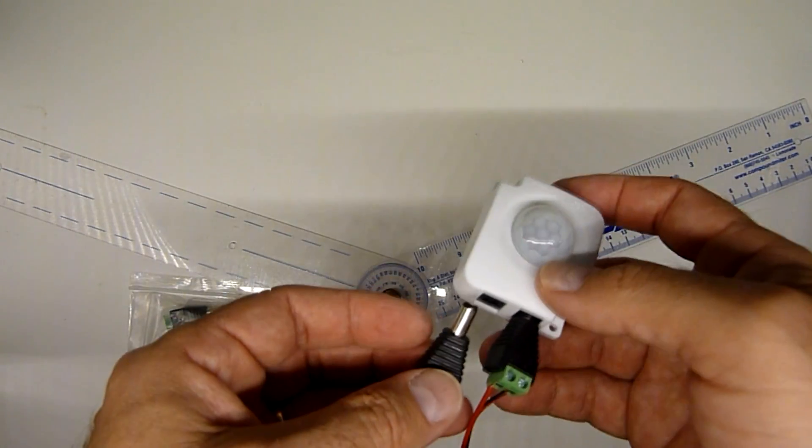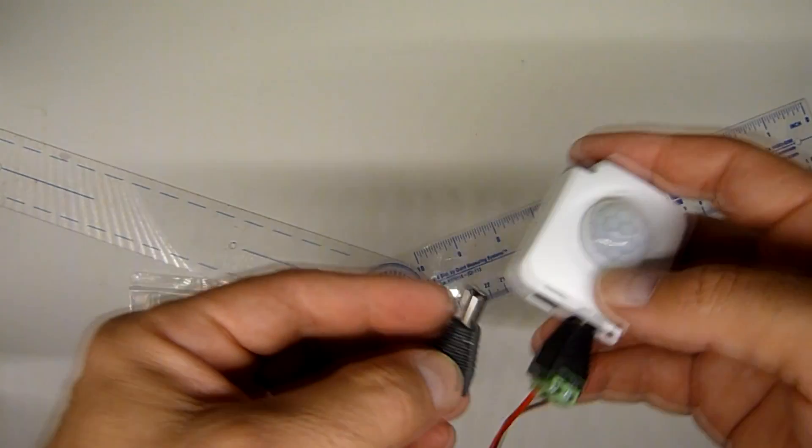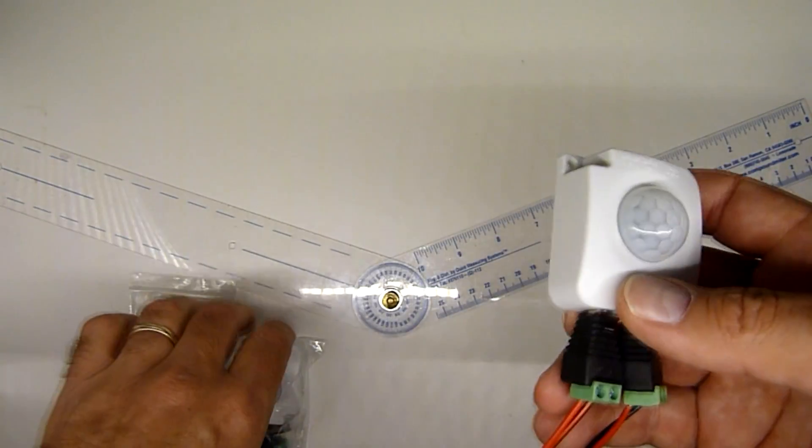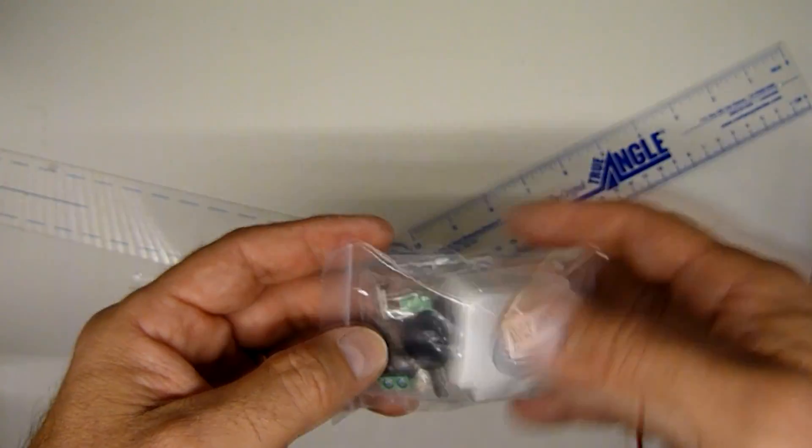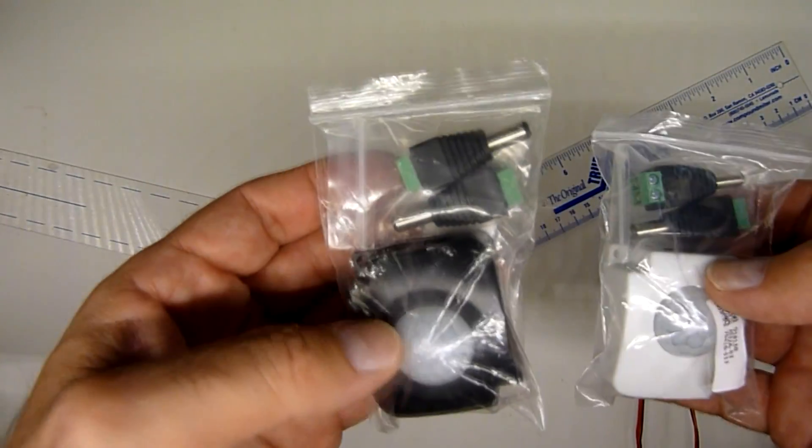And then on this side, you'd need to, it comes with the adapters, you'd need to put in the adapter to get the male connector in. And this is what they look like when they arrive, and they come in white and they come in brown.